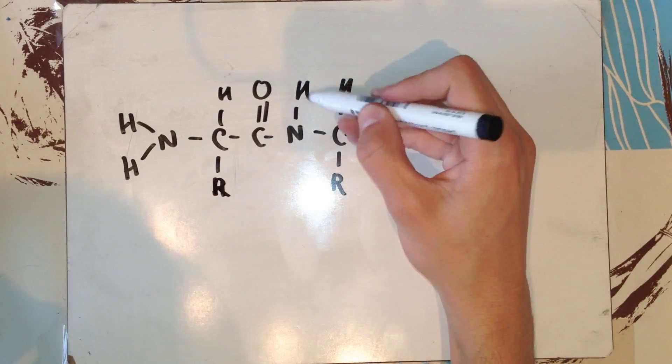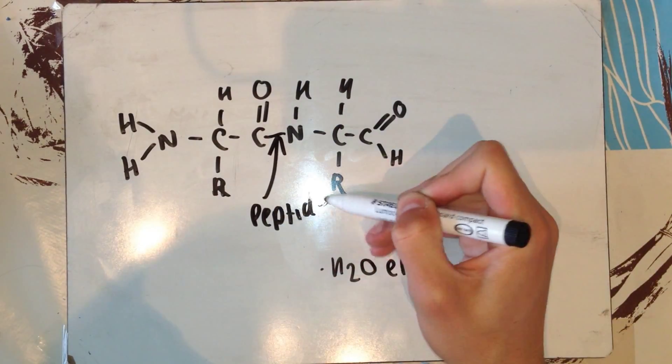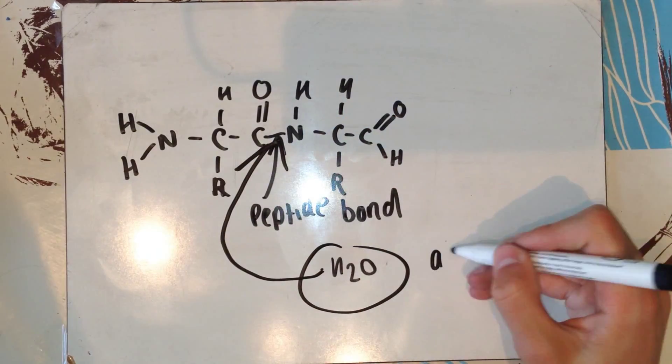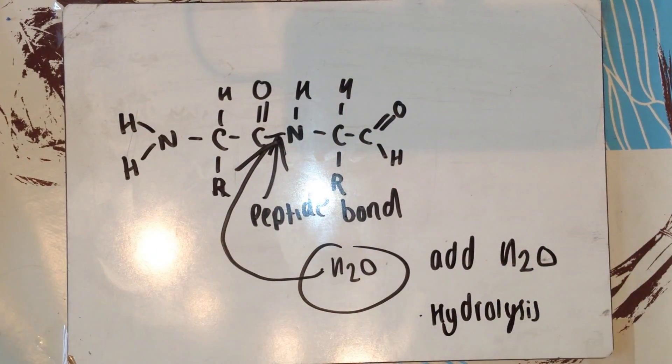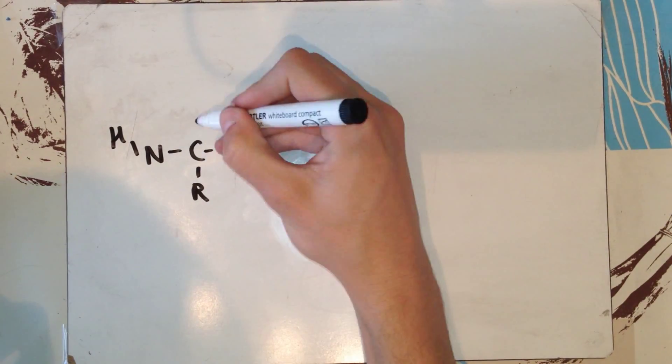So, here you have your peptide bond in your new dipeptide molecule. If you were to add H2O, the peptide bond would break and you would once again have two amino acids. This is known as a hydrolysis reaction.